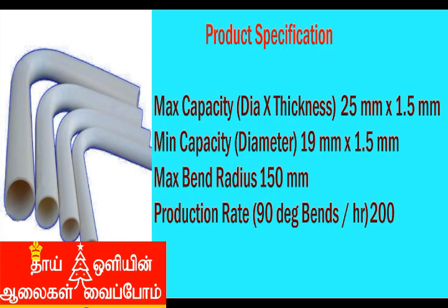This PVC pipe is the production capacity of the bending machine. We can prepare 400 pieces. We can prepare 200 pieces. The PVC pipe can sell all these needs.